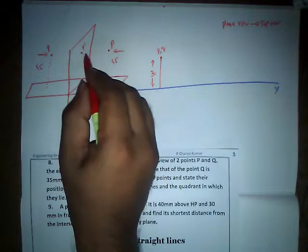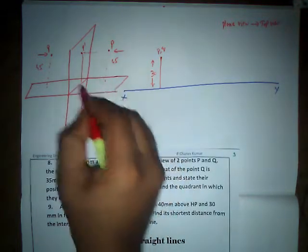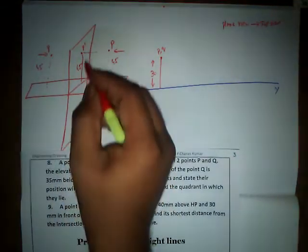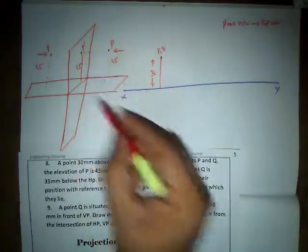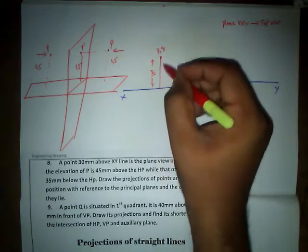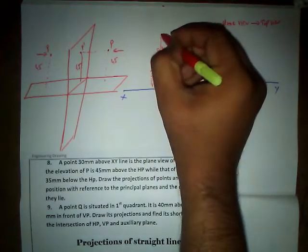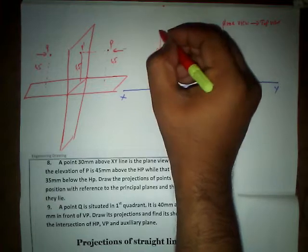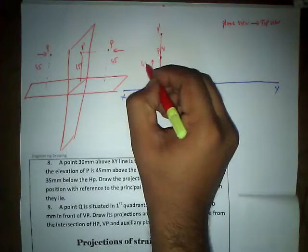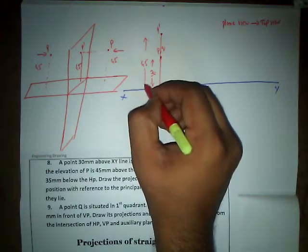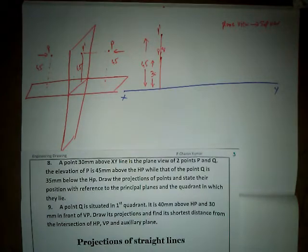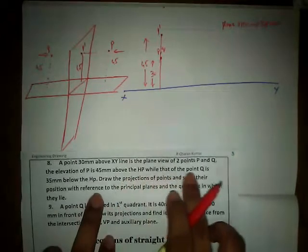P' is going to lie on the vertical plane, above XY at 45mm. Measuring the distance and extending it gives us P' at a distance of 45mm from XY. So one point is done.